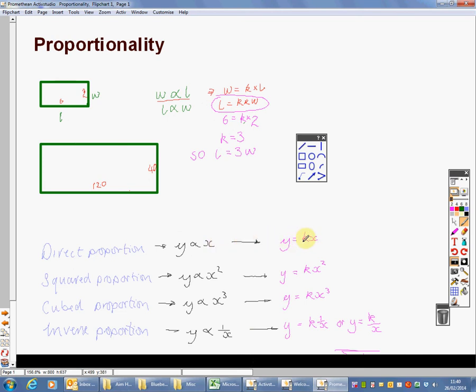If we look at the squared proportion, Y is proportional to X squared. That means Y will always be some number times X squared. For cubed, it will be Y is proportional to X cubed, so Y equals K times X cubed. And finally, inverse proportion, is that Y is proportional to 1 divided by X. This is unusual because as X gets bigger, Y will get smaller. We write that as Y equals K times 1 over X, or an easier way to calculate things with it is to write it as Y equals K divided by X.